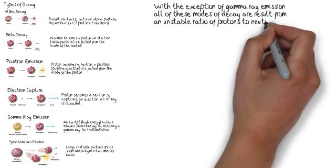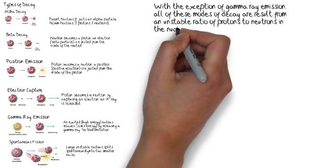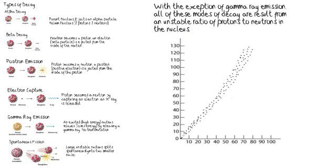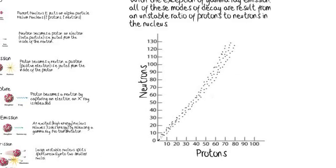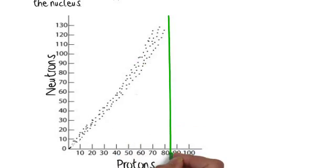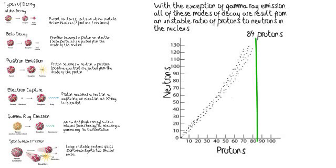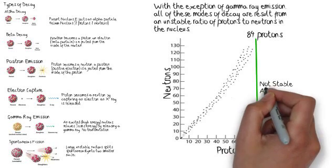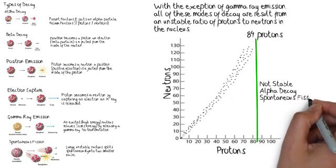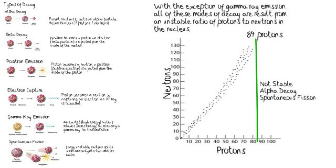So, what we'll do here is we'll put up our belt of stability again. We've got our graph with the stable isotopes, protons on the x-axis, on the y-axis we have neutrons. And what we're going to do is draw a line for 84 protons. And at 84 protons, that is the limit to the number of protons that a nucleus can have. Any more than 84 protons, we have an unstable isotope that will form. And it will not stay as it is. It will either undergo alpha decay or it will undergo spontaneous fission.